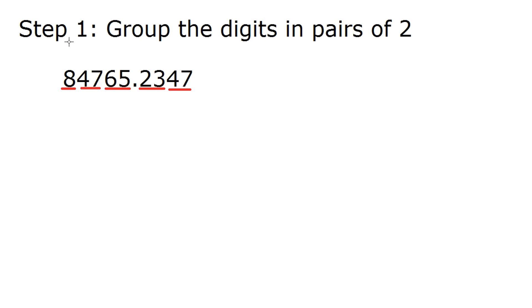An important note is that you want to group it from the decimal outwards, so 65 would be a group, 47 would be a group, and this 8 is by itself, but that's fine, because you could imagine that there's a 0 here, so this would be okay.